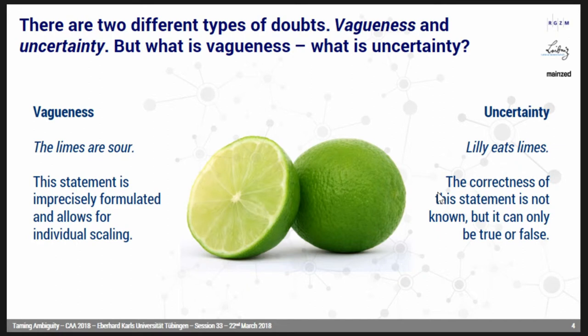If you have some doubts, there is something special. There are two kinds of doubts: vagueness and uncertainty. If something is vague, for example 'limes are sour,' the statement is not really precise and allows for some individual leeway. And then you have uncertainty — for example, 'Lily eats limes' — where the correctness of the statement is not really known because it could be only true or false. So we have to deal with both types of doubts.